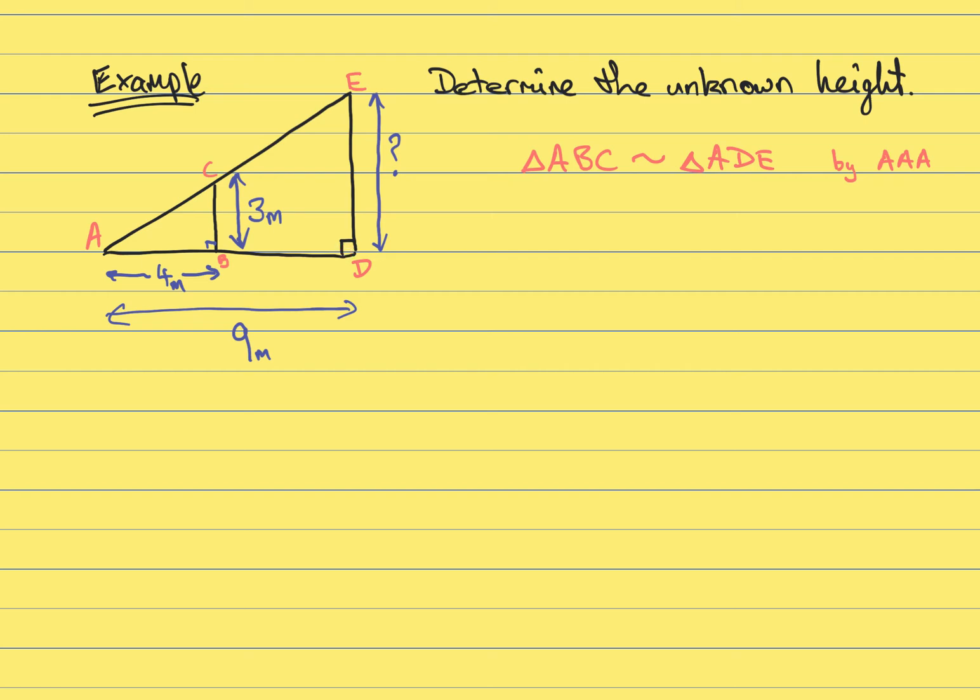They also have two corresponding right angles. And therefore, because the angles of triangles must always add up to 180, the remaining angle must be the same as well. So ABC is similar to ADE.